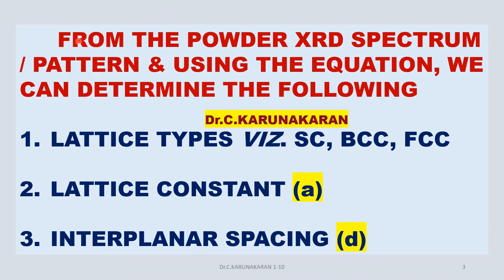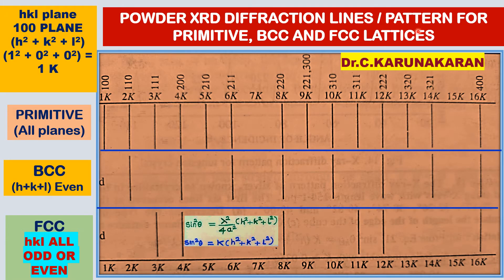From the powder XRD spectrum and using the above equations, we can determine the following: the type of lattice — Simple Cubic, Body Centered Cubic, or Face Centered Cubic — as well as the lattice constant and the interplanar spacing. The powder XRD diffraction patterns for primitive, BCC, and FCC lattices are shown here.